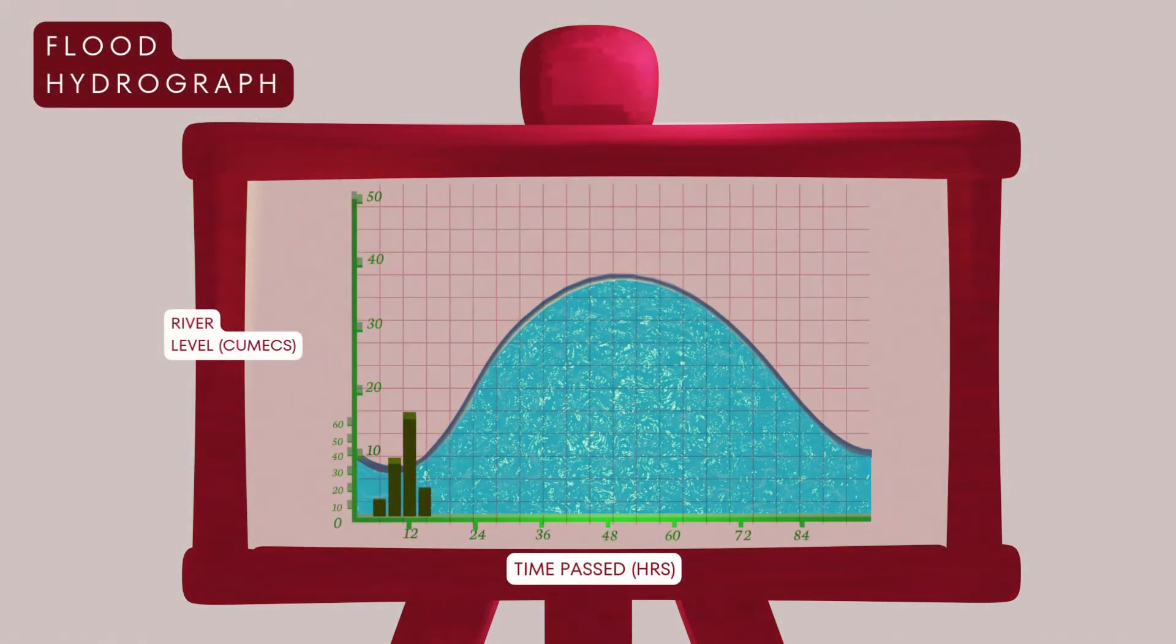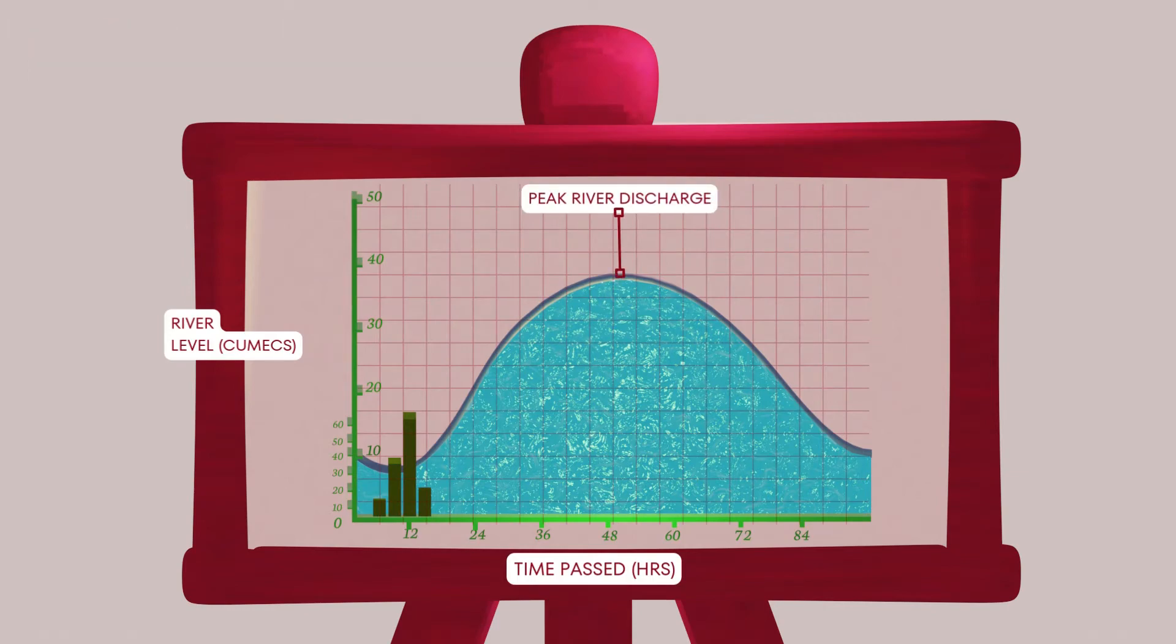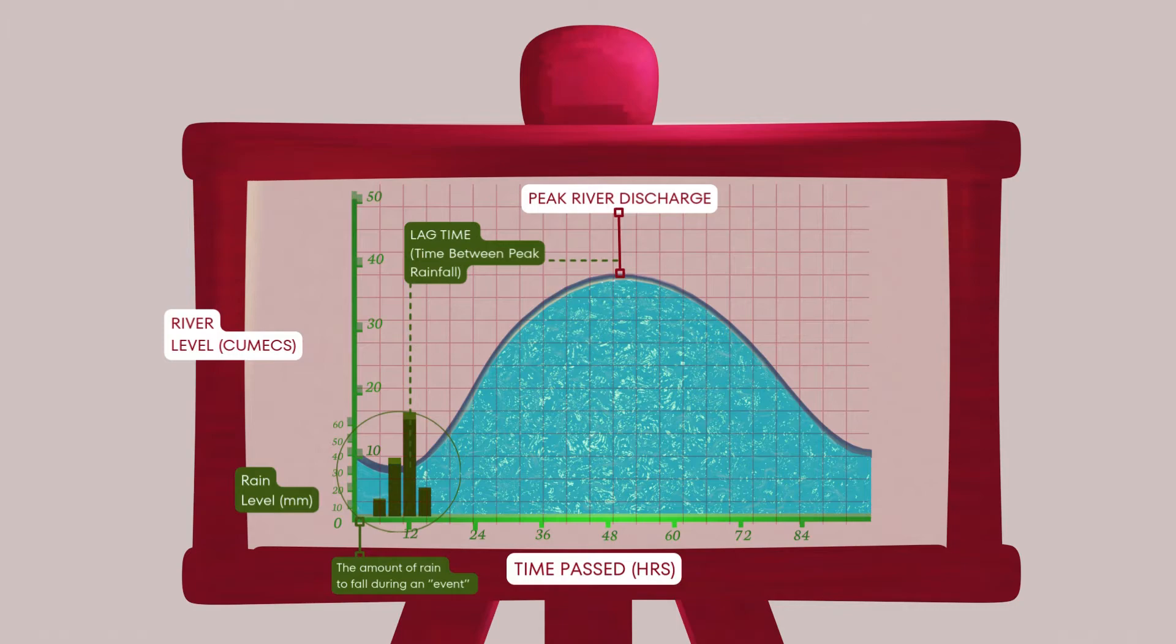The key things to identify on the graph are peak discharge, the highest flow in the river after rainfall, the lag time, the delay between peak rainfall and peak discharge, the rising limb, how quickly the water level rises, and the falling limb, how quickly the river level returns to normal.